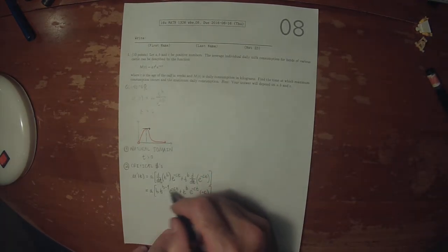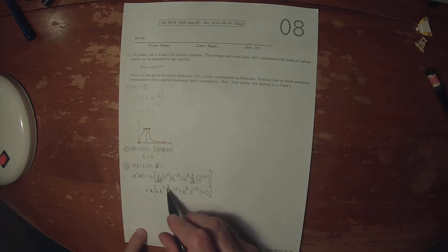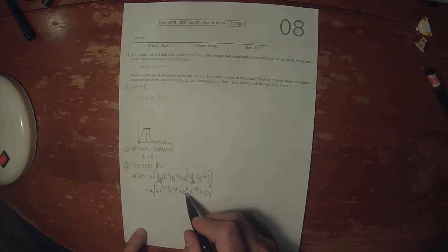So now we can factor out the common factors. There's powers of T. Here's T to B minus 1, and here's T to B. When you're factoring out common powers of T, you always factor out the smaller one.